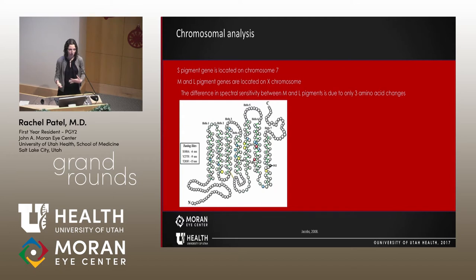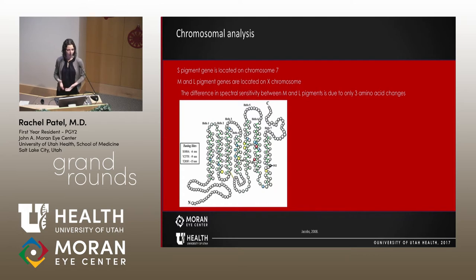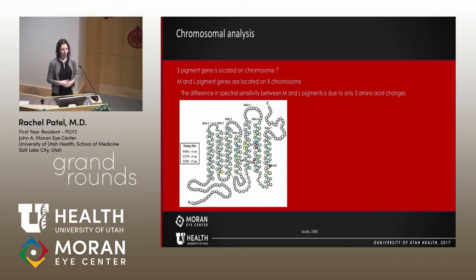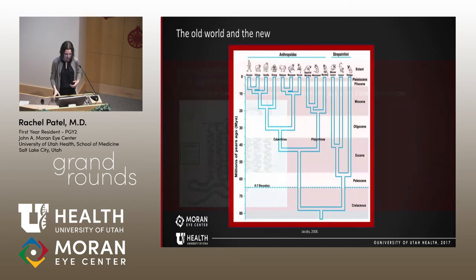One can see how becoming trichromatic from dichromatic would confer an evolutionary advantage. The classic postulation is that you could differentiate ripe fruit from unripe fruit on a tree. There have also been other studies suggesting it may play a role in mate selection or predator detection. So we don't really know the exact advantage. However, a simple duplication doesn't fully explain everything that happened.